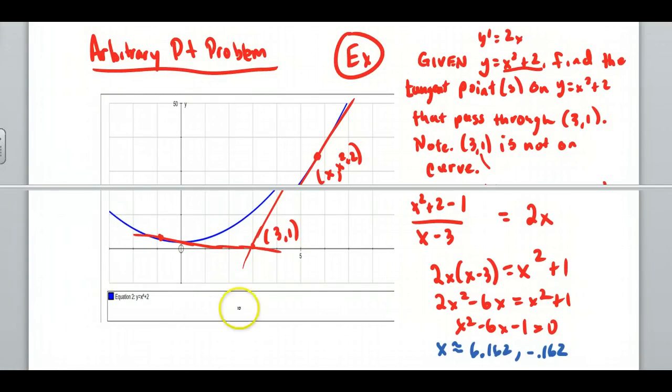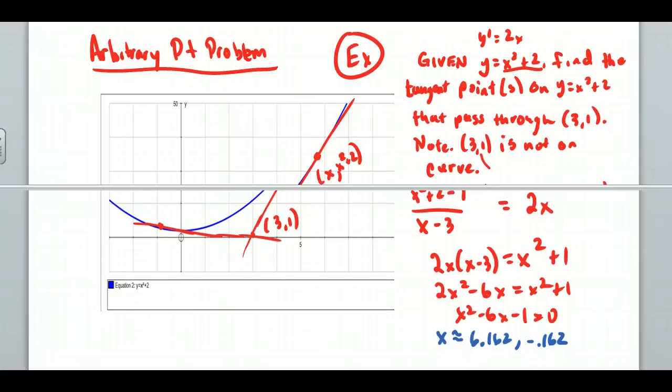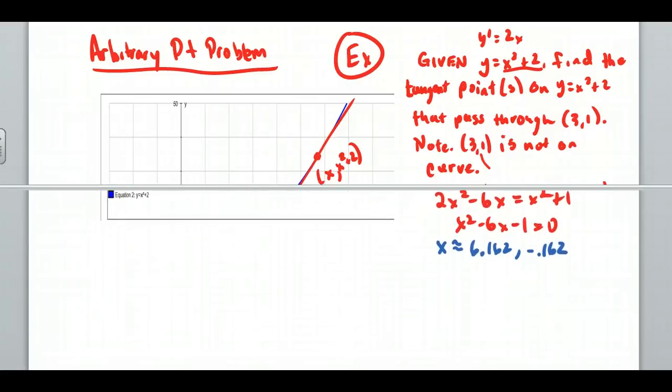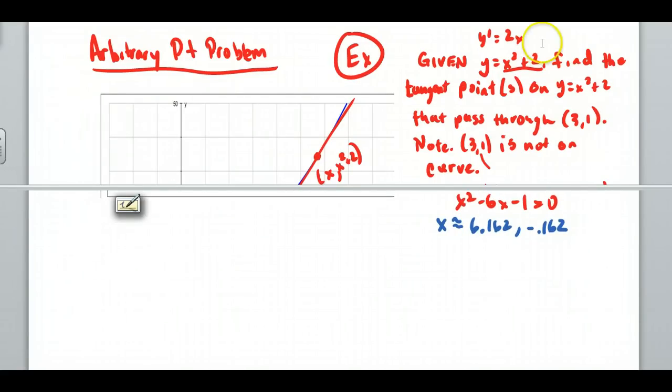So my solutions here turn out to be these two values. Those are the x values of my points of tangency. I need to go find the y values too. So then I got to plug these values into my original, which is the x squared plus 2 up here. If you plug these values in to my original equation, these would be the points on the curve that I end up with point of tangency.